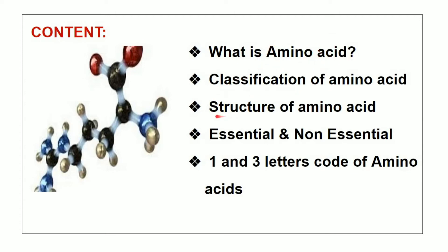If you say there are 20 types of amino acids — what is that structure? What is essential amino acid? What is non-essential amino acid? Without this, I'm going to use the amino acids. If you say there are 20 types of amino acids, you can use 5 types of amino acids.